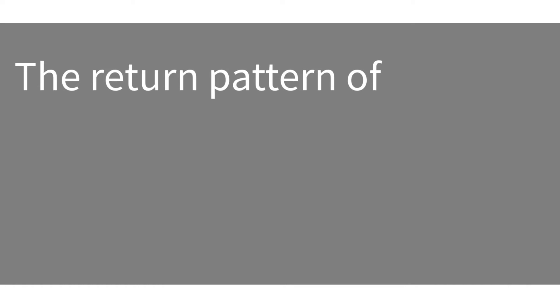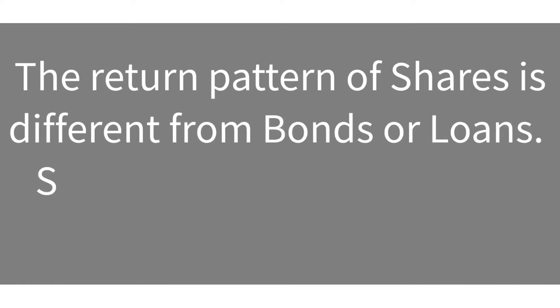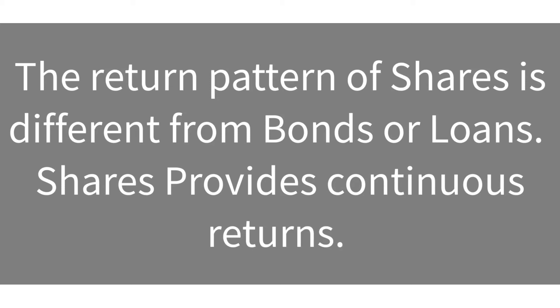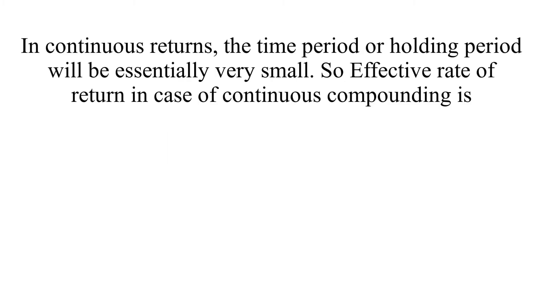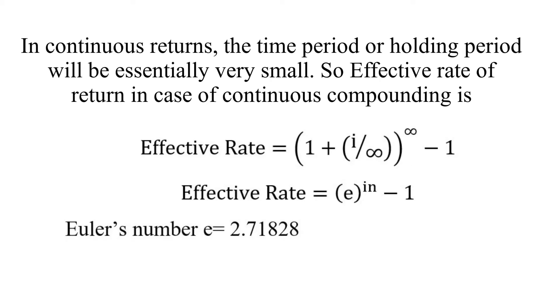When we are dealing with shares, things will be a little different. For share returns, we do not wait a month before returns can move up or down — they are based primarily on dividend payments and capital gains that move all the time. We call this type of return continuous returns. In continuous returns the holding period is essentially very small, and the effective rate of return for continuous compounding can be computed using a formula where e is Euler's number, equal to 2.71828.